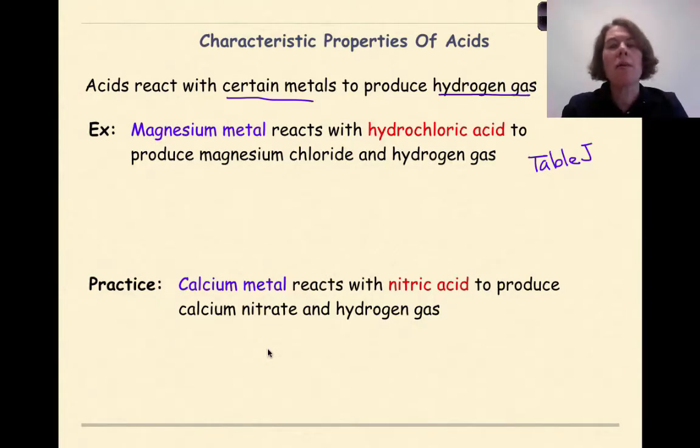Specifically though, we're going to be looking at replacing our standard on table J, which is hydrogen. So magnesium metal reacts with hydrochloric acid to produce magnesium chloride and hydrogen gas.